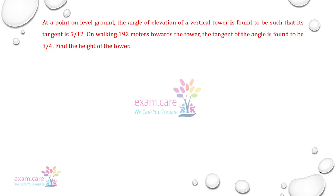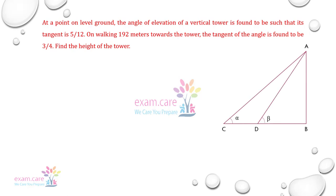आईए पहले डाइग्राम draw करते हैं। AB जो है वो मेरा tower है। पहले हम लोग C point पे थे, C point से जो tangent है वो 5 by 12 है। फिर C point से D point हम लोग आए, और यह जो C से D का distance है वो 192 meter है। तो यह जो distance हम लोग travel किये, तो tangent change हो गया।